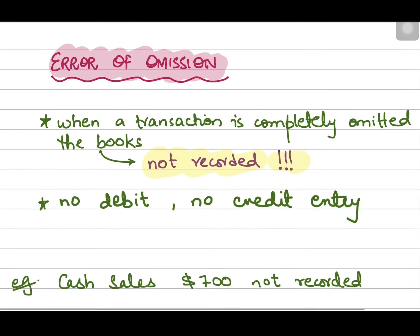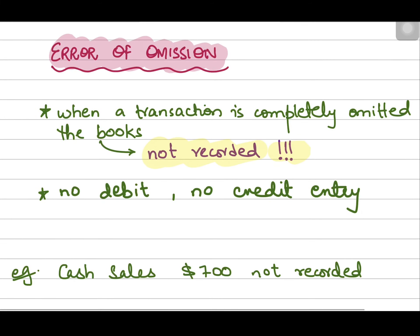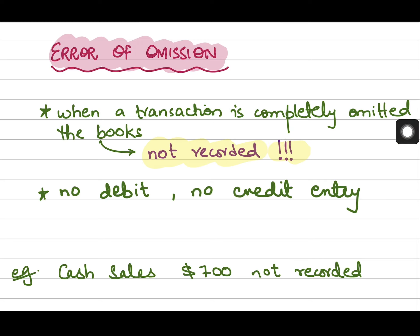We will be starting with the first error, which is error of omission. As the name suggests, this error occurs when a transaction is not recorded at all, or the transaction is completely omitted from the records. Either you forgot to record it in the book of original entry, and if it is not recorded there, then it is not recorded in the T-accounts or ledgers either, and there is no debit or credit entry for that transaction.